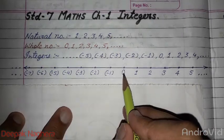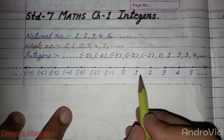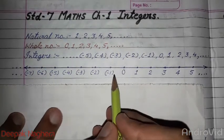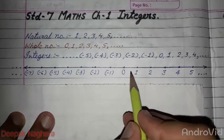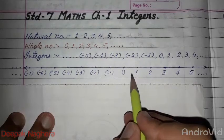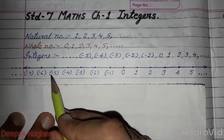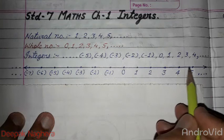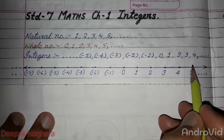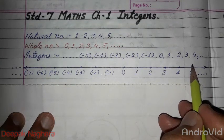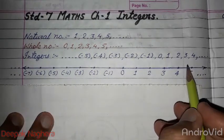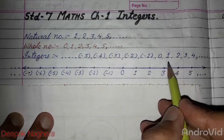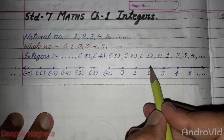On the number line, here is 0. The right side is positive and the left side is negative. If we look at the right side and go left, then the numbers become smaller.